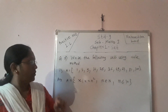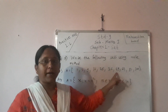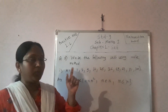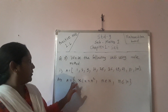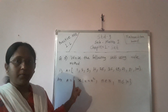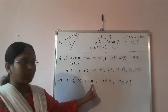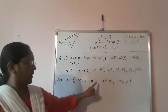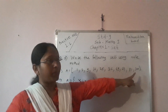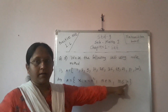By observation, we observe that all numbers are perfect square numbers. So in rule method, the answer is: A = {x | x = n², where n belongs to natural numbers and 1 ≤ n ≤ 10}.